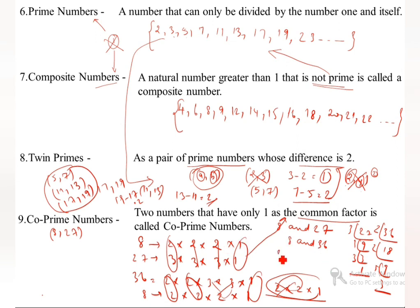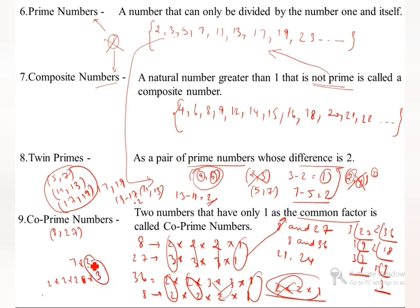Now take 21 and 24: 21 = 3×7, and 24 = 2×2×2×3. Here 3 is a common factor besides 1, so the common factor is not only 1. Therefore 21 and 24 are not co-prime. Only 8 and 27 is the co-prime example given, where 1 is the only common factor.